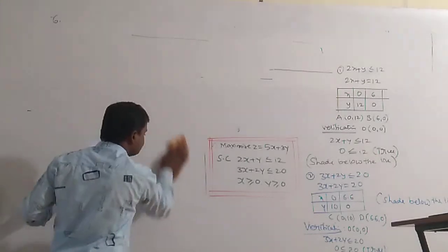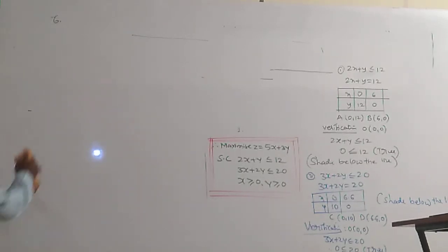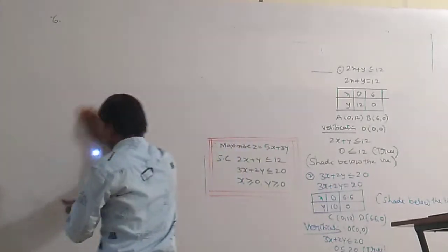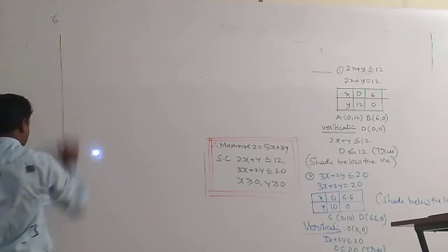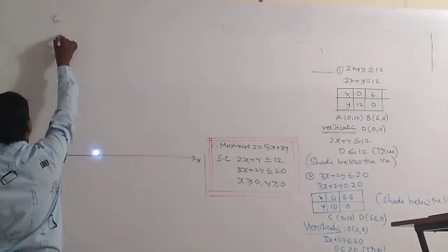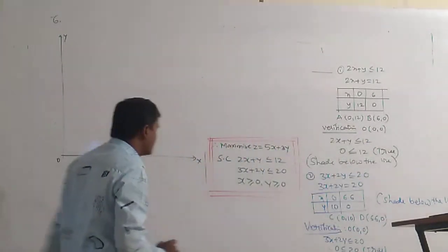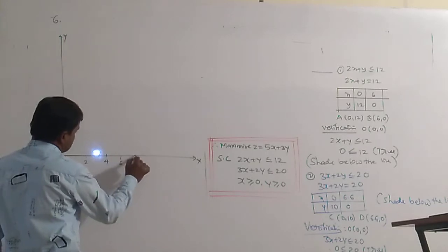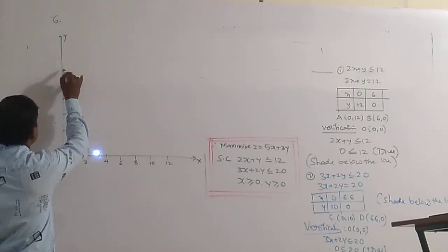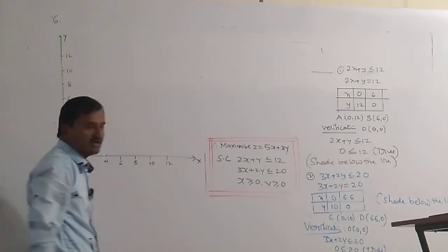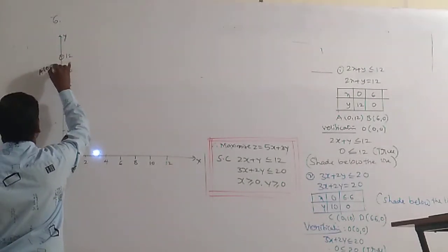Now we find the solution by graphical method. Draw the x-axis and y-axis with origin. Plot point A at (0, 12) on the y-axis and point B at (6, 0) on the x-axis. Join these two points to get the line 2x + y = 12. Shade below this line.